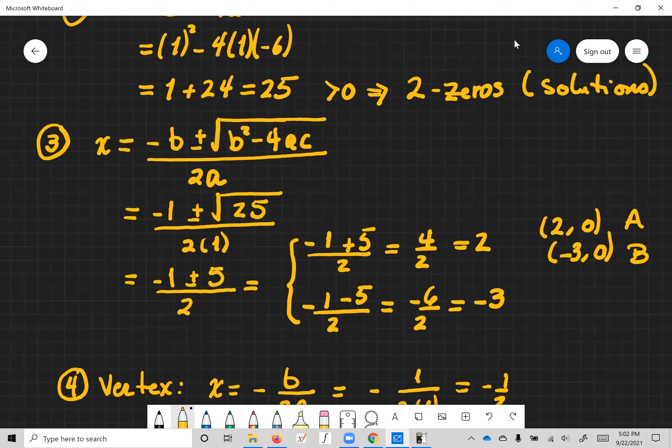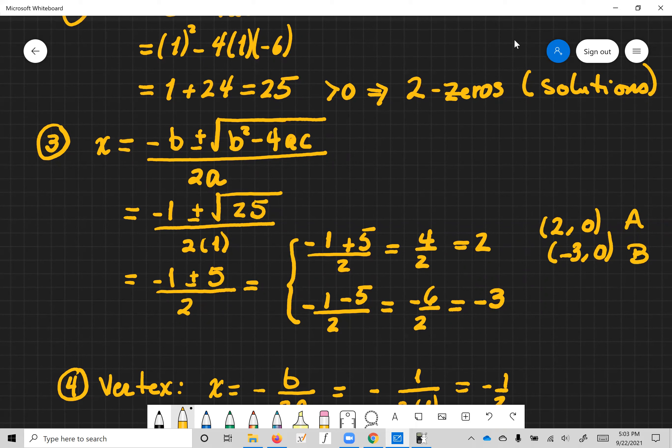And this is the discriminant right here that we just computed to be 25. So you plug the numbers in and we come down to here.